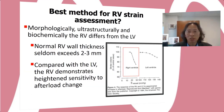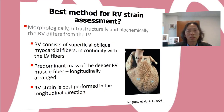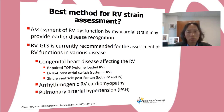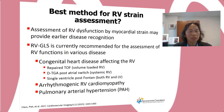Morphologically, ultrastructurally, and biochemically, the RV differs dramatically from the LV. The normal RV wall seldom exceeds 2 to 3 mm compared to the LV of 8 to 11 mm. The RV demonstrates a heightened sensitivity to absolute load change. The RV consists of superficial oblique fibers continuous with LV fibers, but the predominant mass of the deep RV muscle is composed of longitudinally arranged fibers. Hence, RV myocardial strain is best performed in the longitudinal direction, and RV global longitudinal strain is currently recommended for assessment of RV function.